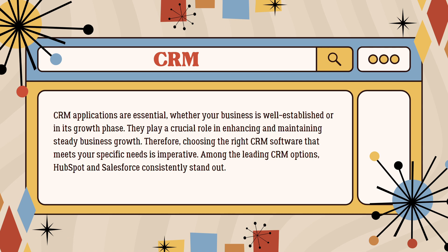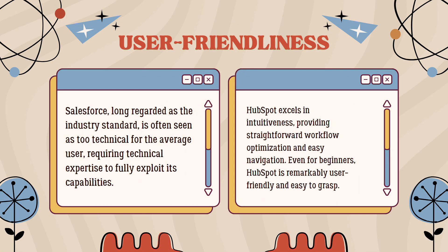When evaluating CRM software, one crucial aspect to consider is user-friendliness. It is essential because a powerful CRM tool is pointless if employees shy away from using it due to its complexity. Salesforce, long regarded as the industry standard, is often seen as too technical for the average user, requiring technical expertise to fully exploit its capabilities. In contrast, HubSpot excels in intuitiveness, providing straightforward workflow optimization and easy navigation, even for beginners. HubSpot is remarkably user-friendly and easy to grasp.